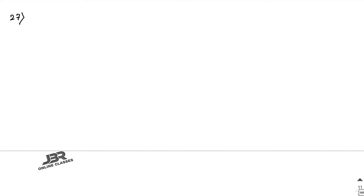Now sum number 27: how many arrangements can be formed by the letters of the word VOWELS? There are total 6 letters. With no restriction, all 6 different letters can be arranged in 6! ways. So the first answer is 6! = 720.